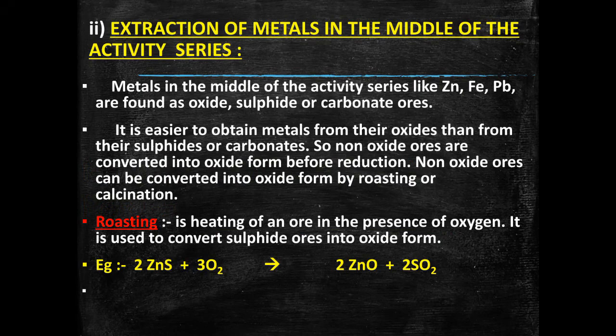Let us take an example of a sulfide ore. ZnS, that is zinc sulfide, on heating in the presence of oxygen — or roasting — gives zinc oxide as the main product, and sulfur dioxide gas is evolved. Now we have the metal oxide, and to extract the metal we will reduce it.